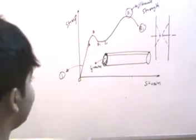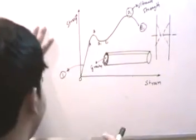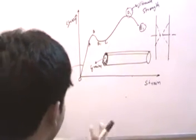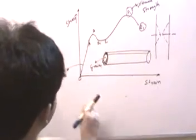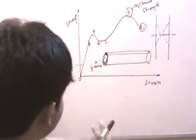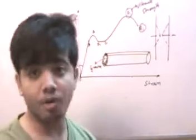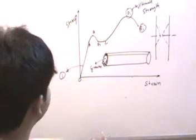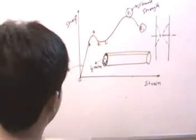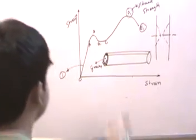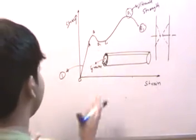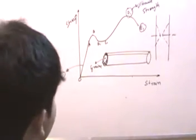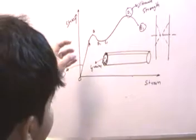A brief synopsis: any material is composed of two regions — number one, the grains, and number two, the boundary regions. In the elastic portion of the curve, from O to B, the boundary materials take effect. Since boundary materials are essentially elastic, there is an increase in strain with an increase in stress, and when you release the load it comes back without any permanent deformation.